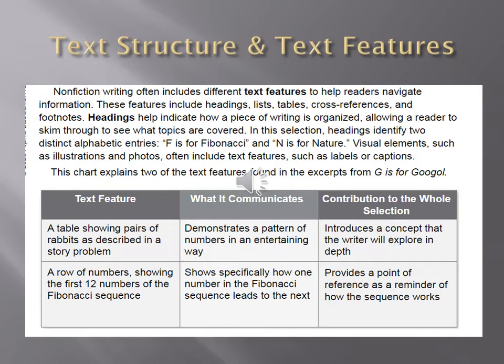In this selection, headings identify two distinct alphabetic entries: F is for Fibonacci and N is for Nature. Visual elements such as illustrations and photos often include text features such as labels or captions.